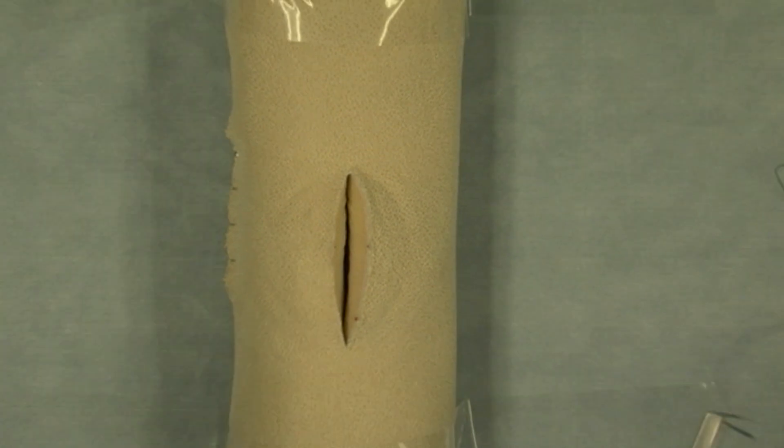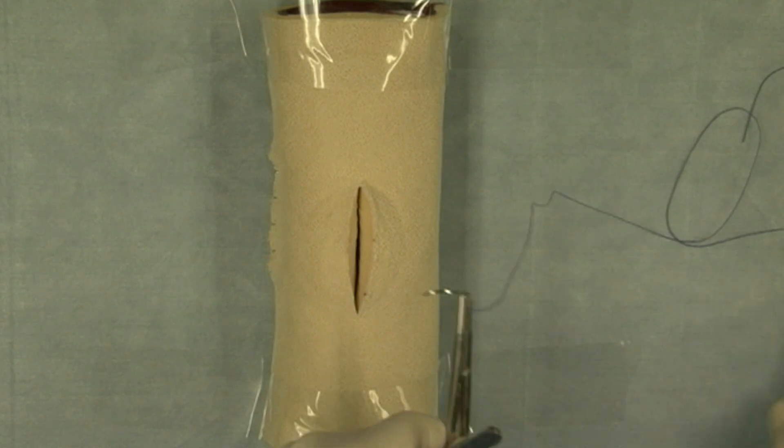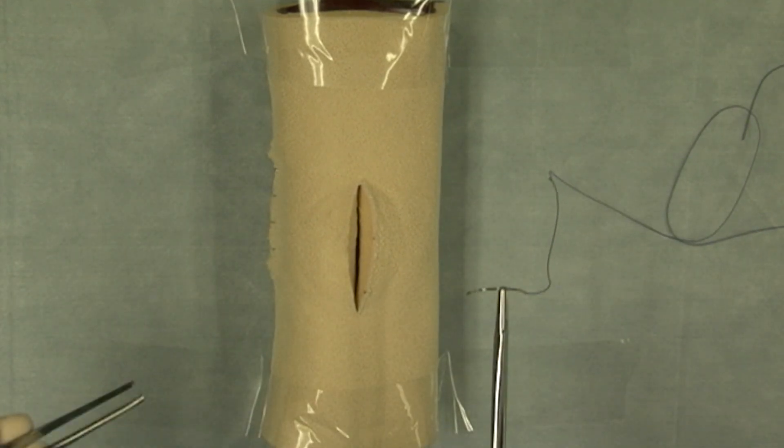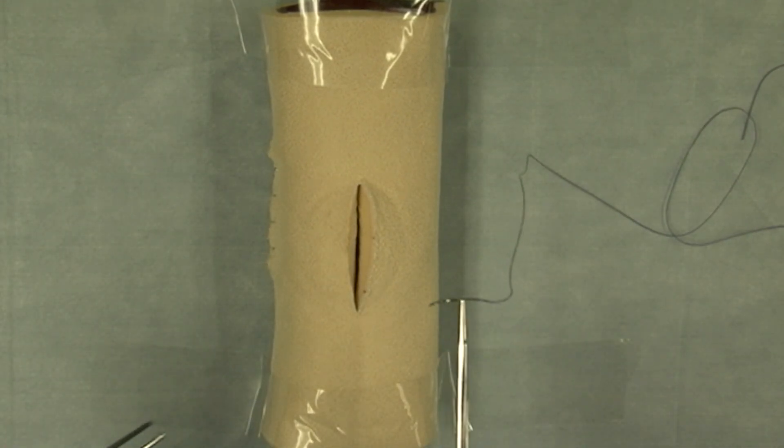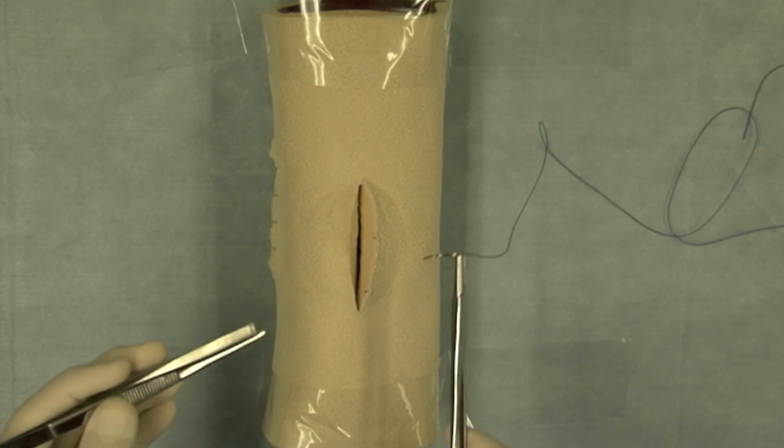I'm going to be demonstrating the near far far near suture pattern, which is a tension relieving suture pattern that's used primarily under conditions of tension on the skin, and so you will be performing this pattern on the skin portion of the daisy.